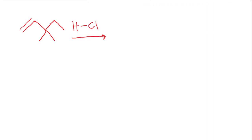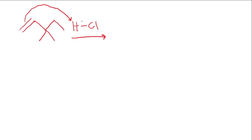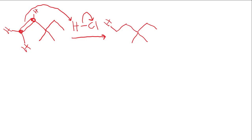Let's look at another example of hydrohalogenation. Feel free to pause the video and then check your work. The first step is the double bond attacks the hydrogen, and the electrons in the H-Cl bond break and go to the chlorine. Again, we must decide to which side of where the double bond used to be we will add the hydrogen — the left side which is less substituted, or the right side which is more substituted. We're going to add it to the left side, because the hydrogen always adds to whichever side used to have more hydrogens. The left side had two hydrogens, the right side had one, so this carbon becomes deficient and we have a secondary carbocation.